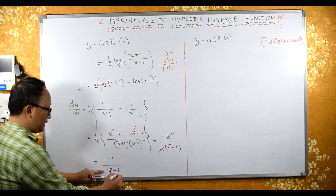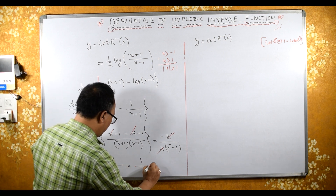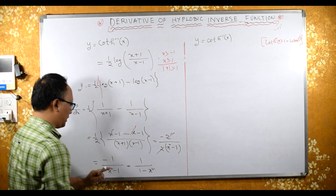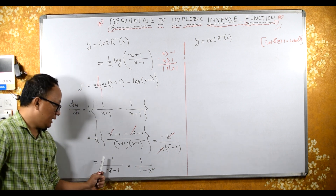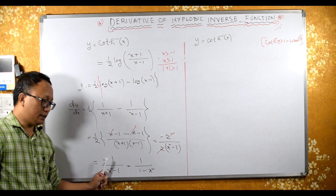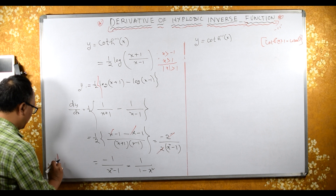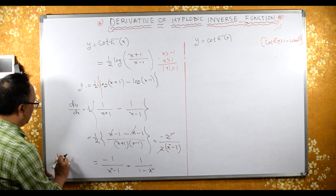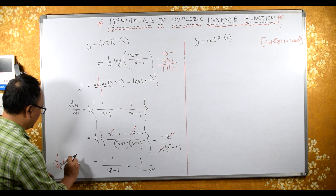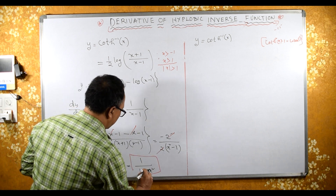If you want to remove the minus, you can send the minus inside the denominator: 1 upon 1 minus x squared. This is the same result because sending minus inside gives minus x squared and minus minus gives plus. Therefore, d/dx of coth hyperbolic inverse x equals 1 upon 1 minus x squared.